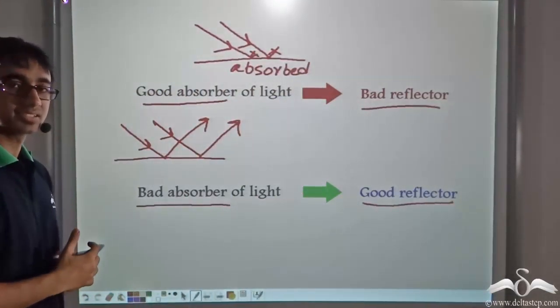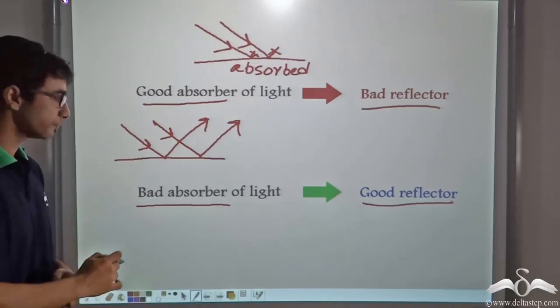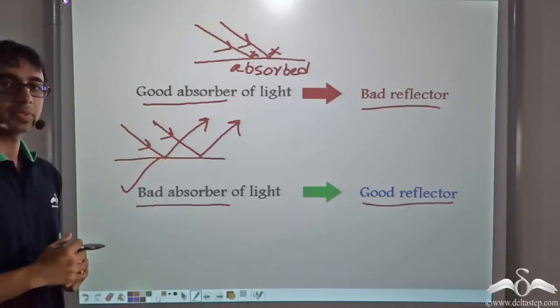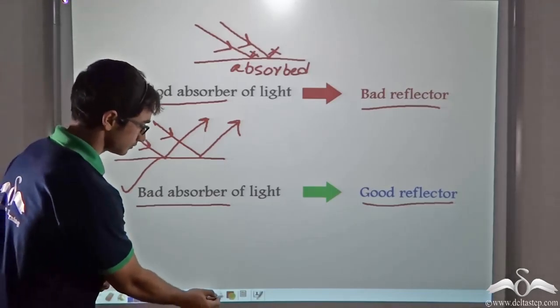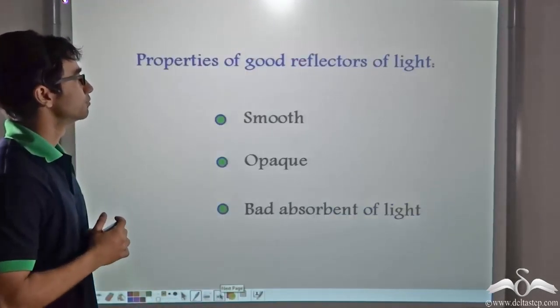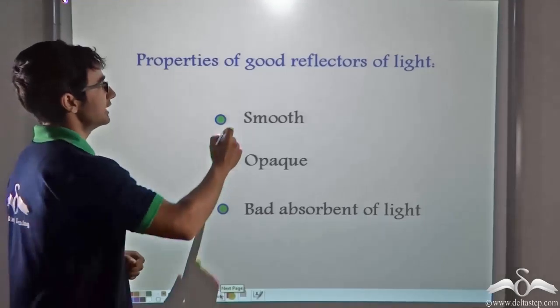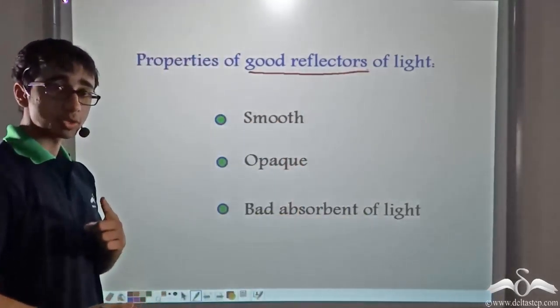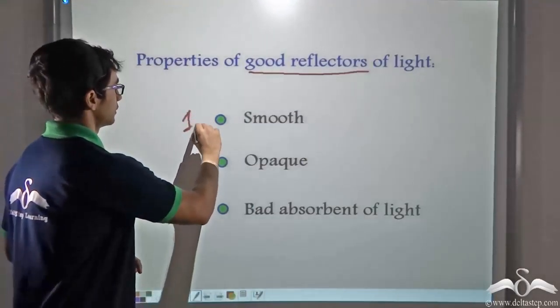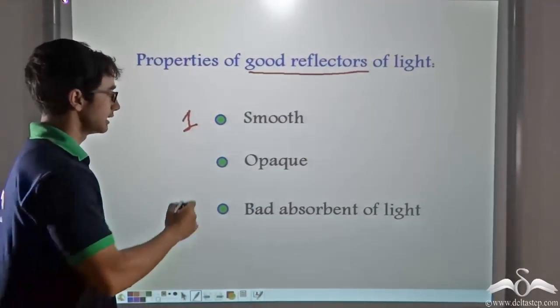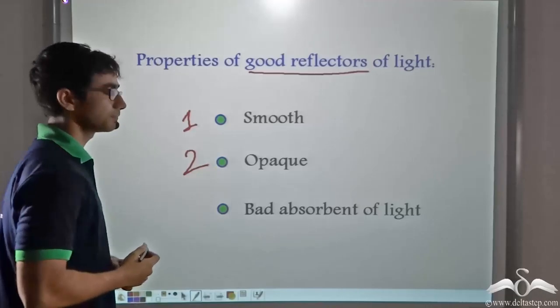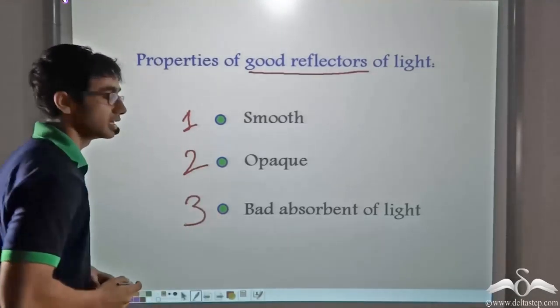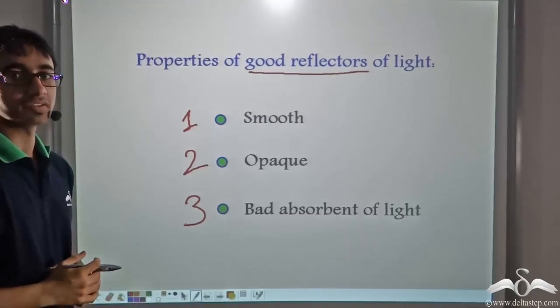So can we say that this is a favorable criterion? Yes. So what are the three criterion that we learnt so far? Properties that a good reflector of light must have are the following. The first property should be, it should be smooth. The second property should be, it should be opaque. And the third, it should be a bad absorbent of light.